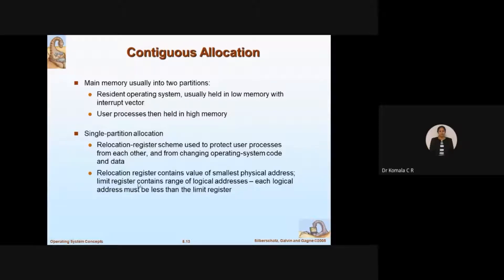Single partition allocation is explained in two steps. The relocation register scheme is used to protect user processes from each other and from changes to operating system code and data. We have a number of processes, and preemption and no-preemption is handled between them. All these things are taken care of by the scheme called the relocation register.